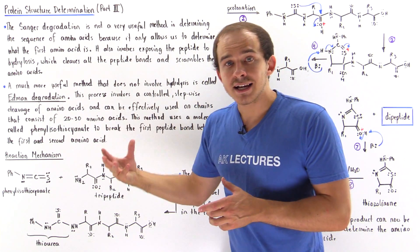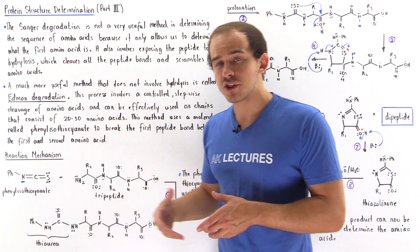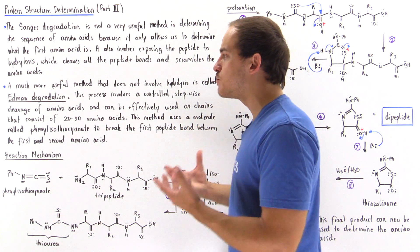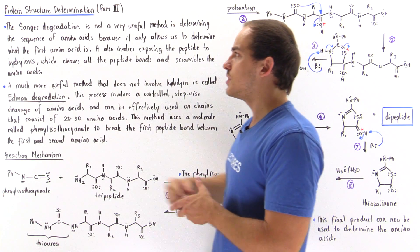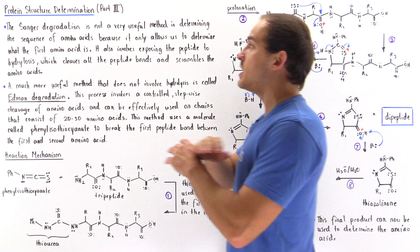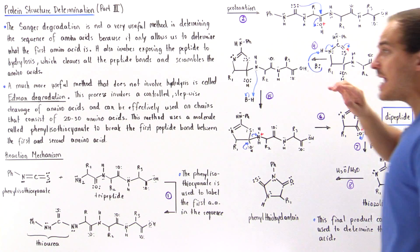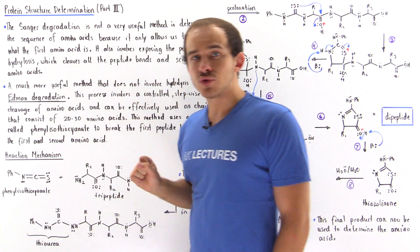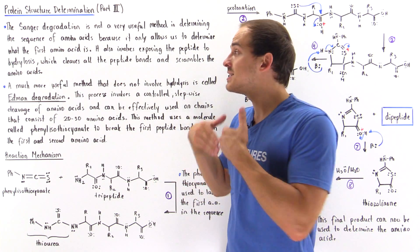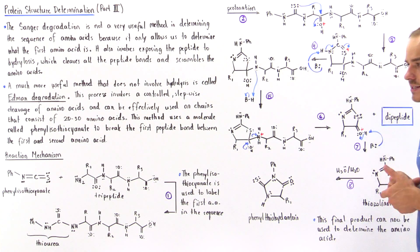If we conduct a second, third, or fourth Edman degradation, we can determine what the second, third, and fourth amino acid in our sequence is. That is why this degradation is so much more useful than the Sanger degradation — the Sanger only allows us to determine what the first amino acid is and hydrolyzes the protein into its constituent amino acids. But in the Edman degradation, the protein is not hydrolyzed into its constituent amino acids, which is exactly why we can continually use it to determine the sequence.